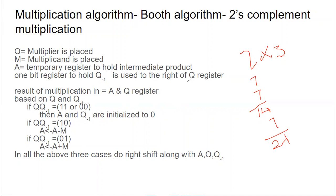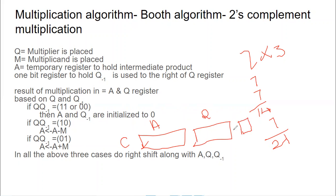Q-minus-1 is used to the right of the Q register. So the arrangement is: carry, then A register, then Q register, and then the one-bit Q-minus-1 register. The Q register runs from Q-zero to Q-n, and after the least significant bit comes Q-minus-1. In the previous multiplication algorithm we used a logical right shift, but here we are going to use an arithmetic right shift.